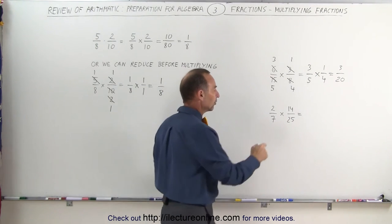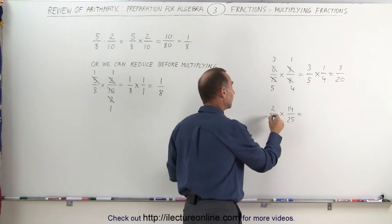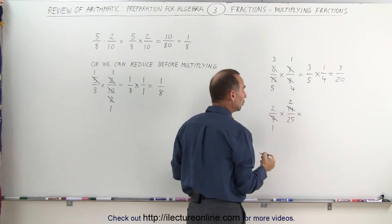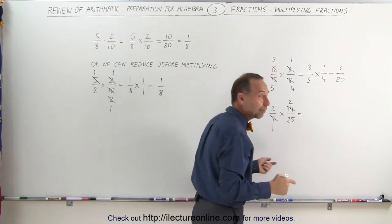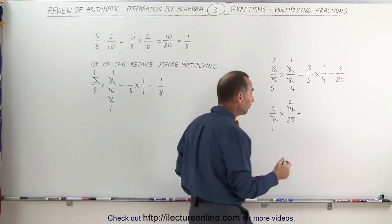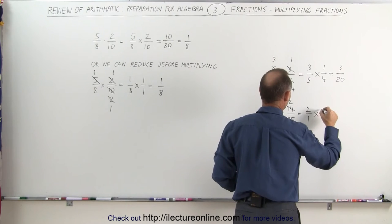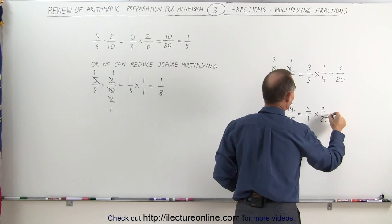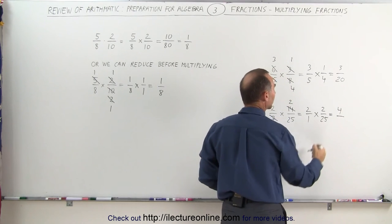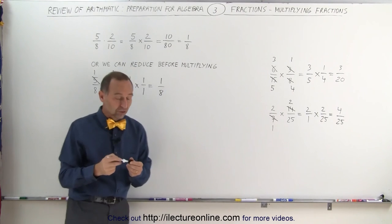Same over here. Notice that the 7 and the 14 can both be reduced. The 7 divided by 7 is 1. The 14 divided by 7 is equal to 2. The 2 and the 25 cannot be reduced because that's an even number and that's an odd number. So what we have left is 2 divided by 1 multiplied times 2 divided by 25. Again, we multiply the numerators together, we get 4. We multiply the denominators together, we get 25. And that's how we multiply fractions.